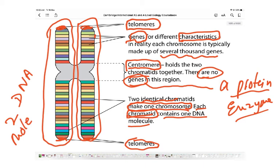The ends are called telomeres, the central area where the chromatids are joined is called the centromere, and each chromosome — when it duplicates — consists of two chromatids. Each chromatid contains one DNA molecule.